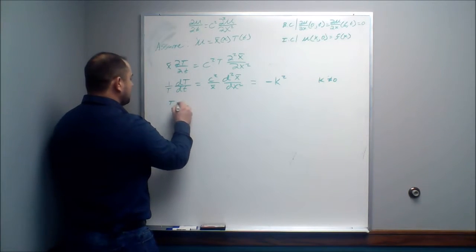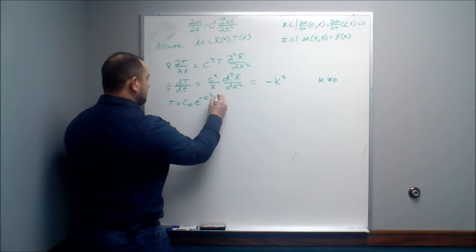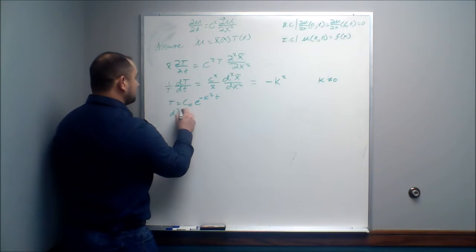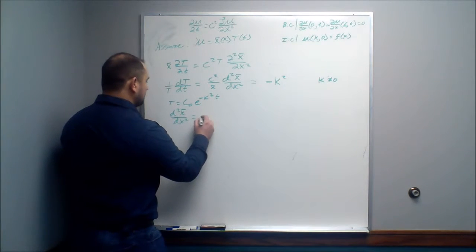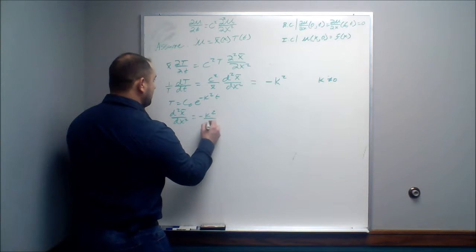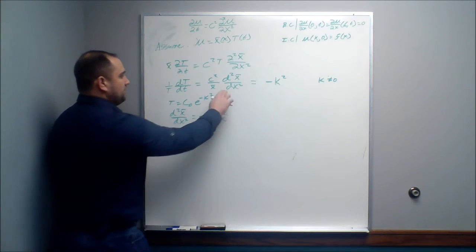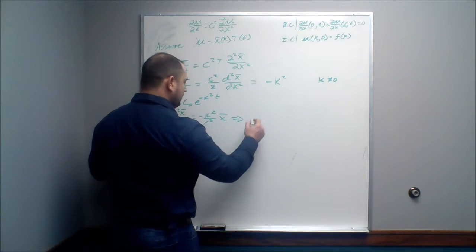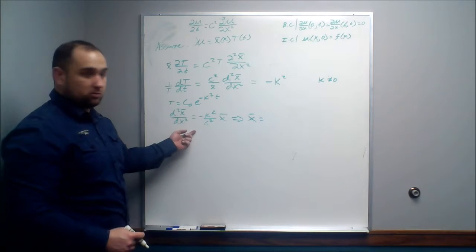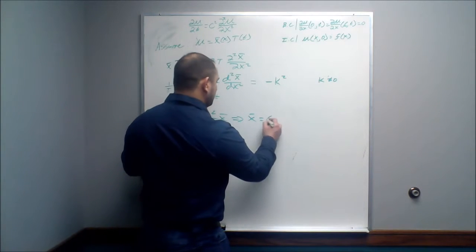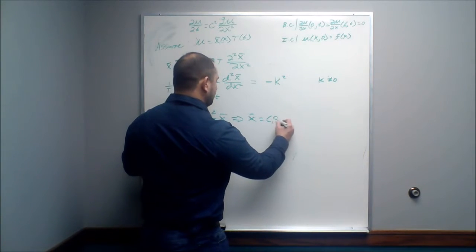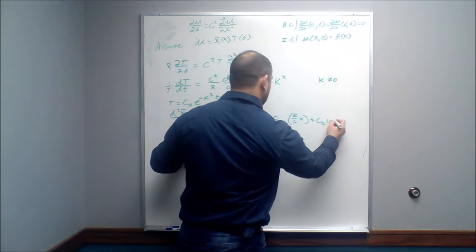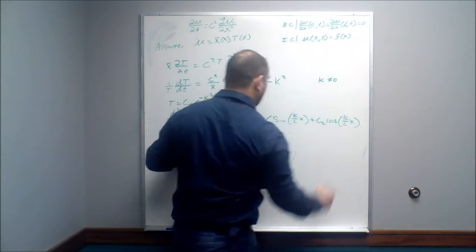So our time component is T = c₀·e^(−k²t), and our spatial equation becomes d²X/dx² = −(k²/c²)·X. Rearranging this equation, we get X = c₁·sin(kx/c) + c₂·cos(kx/c).